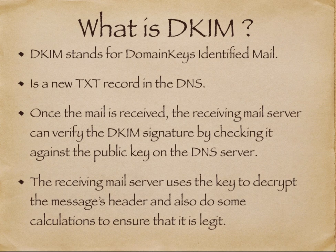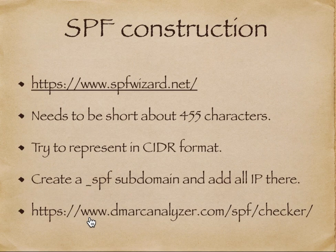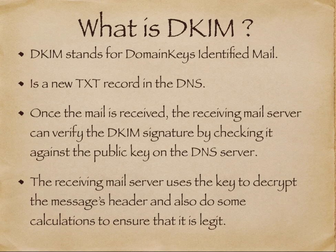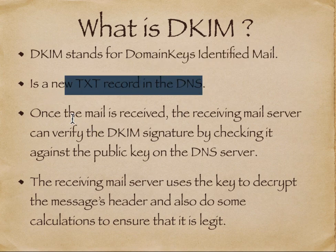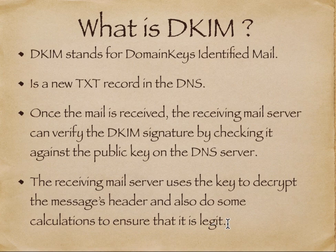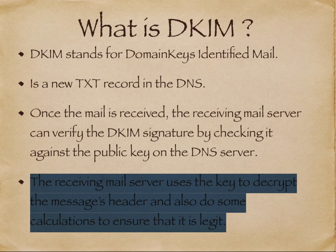Once you create your SPF record, you can go to a DMARC analyzer SPF checker to verify it is written correctly. The next component is DKIM — Domain Keys Identified Mail — another text record in your DNS. If A.com sends a mail to B.com, the receiving server B.com queries A.com's DNS for the DKIM public key, checks it against the encrypted message received, and if the hashes match in the header, it can accept the email with a high degree of certainty.